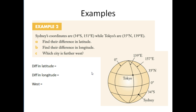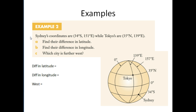The first example — these examples are in your textbook, so I do suggest you copy down the words. Don't need to worry about the picture so much; that's just to give you a visual representation of what's happening here. Sydney's coordinates are 34 degrees south and 151 degrees east, while Tokyo is 35 degrees north and 139 degrees east. Find the difference in latitude.